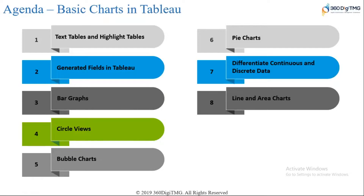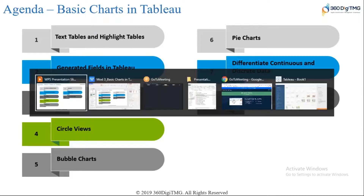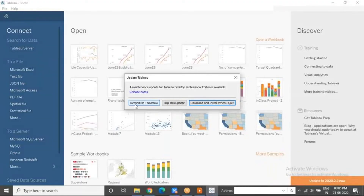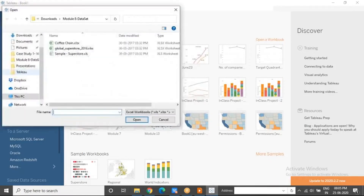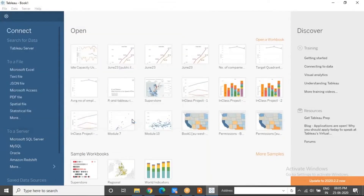I had requested you all to explore labels — the label shelf — when you click on it, the different options that are available and what we can do there. I will give you a brief overview of mark labels specifically — the labels that appear on the mark. Every data point in Tableau is called a mark, and we are going to look at the label on the mark.